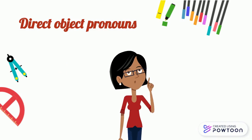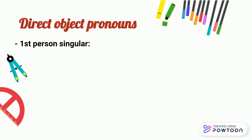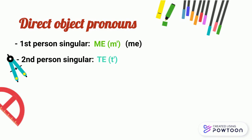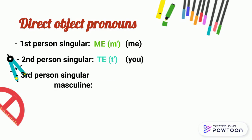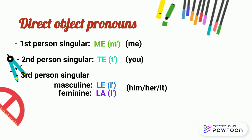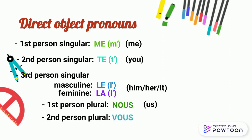The direct object pronouns are: at the first person singular, me or m' before a vowel or a silent h, meaning me. Second person singular, te or t', meaning you. Third person singular masculine, le or l'. Third person singular feminine, la or l', meaning him, her, or it. First person plural, nous, meaning us. Second person plural, vous, meaning you. Third person plural, les, meaning them.